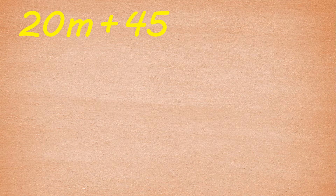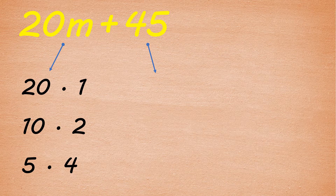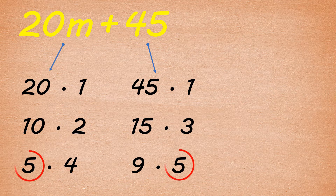Let's solve 20m plus 45. Factors of 20m are 20 and 1, 10 and 2, and 5 and 4, and m for the variable. While the factors of 45 are 45 and 1, 15 and 3, and 9 and 5. Their common factor is 5.